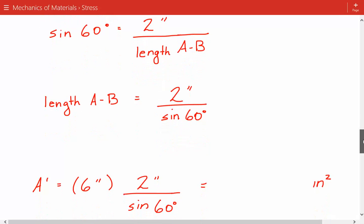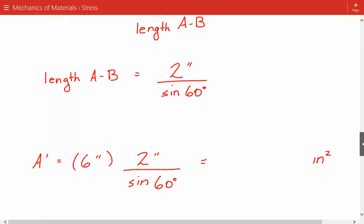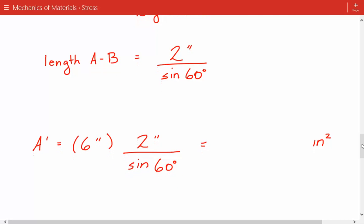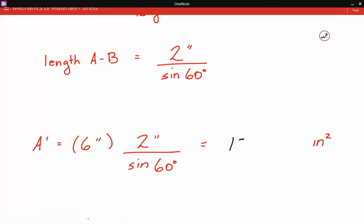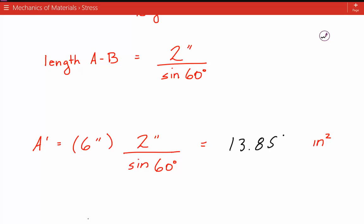So our area is equal to 6 inches times 2 inches divided by sine of 60 degrees, which comes out to be 13.856 inches squared. So once we've calculated the normal and shear force and the area over which they are acting upon.